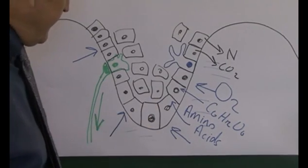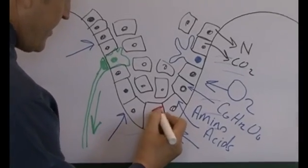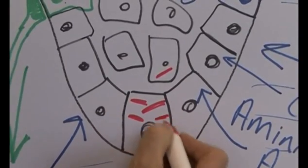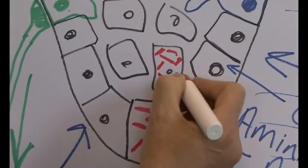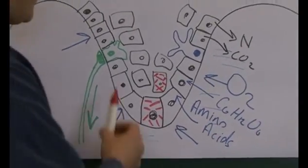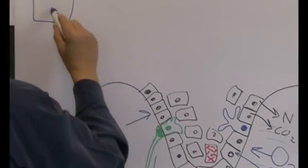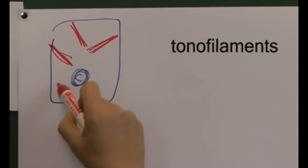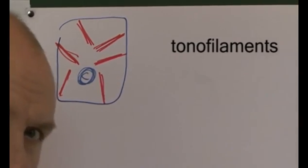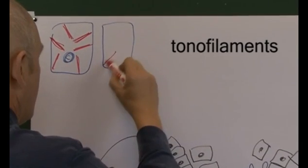Inside these young keratinocytes there are filaments of protein called tonofilaments. These are part of what's called the cytoskeleton of the cell — inside cells you have networks of proteins, and the cytoskeleton is particularly pronounced in keratinocytes. If we looked at that under larger magnification — imagine this is a keratinocyte — we'd see that it contains tonofilaments: filaments of protein inside the individual keratinocytes.